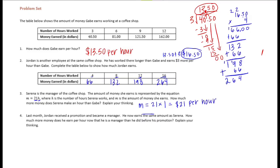So she's making $21 per hour, and we want to know how much more money does she make than Gabe. So Gabe was making $13.50 per hour, so let's just subtract those. $21 minus $13.50. We need to borrow.